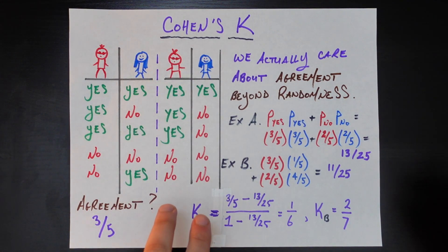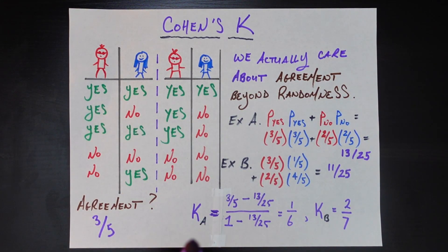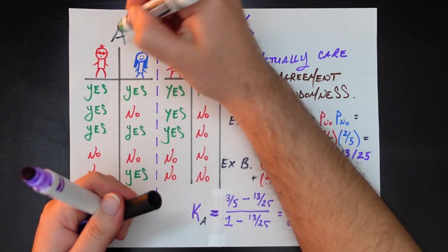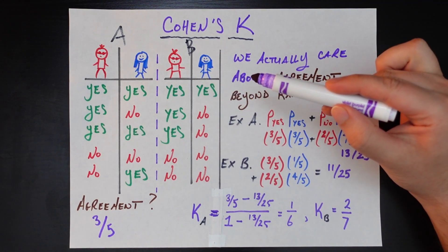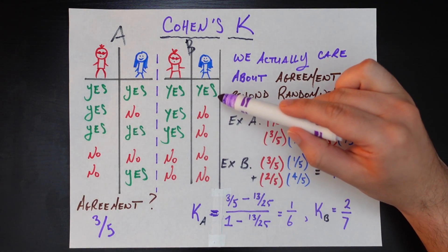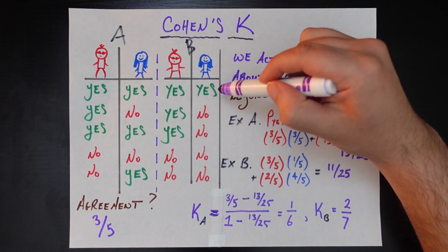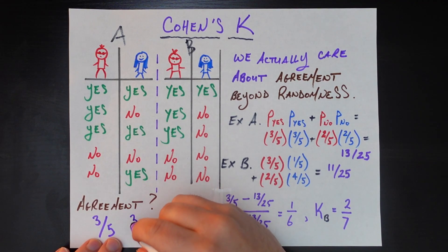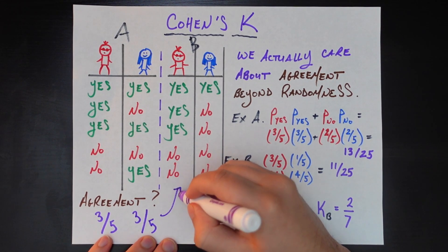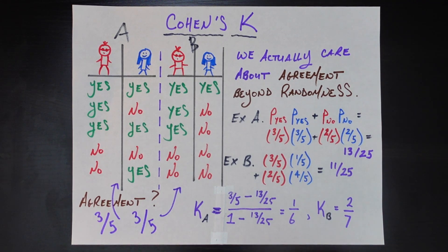Now let's say we had instead a second set of ratings — let's call it B — where Mr. Red's ratings are unchanged: yes, yes, yes, no, no. Mrs. Blue's have changed; they're now mostly no's with just one yes. But when we compute the same naive agreement, they agreed on the first, fourth, and fifth candidates — again three out of five. So the level of agreement for A and B appears to be exactly the same using this metric.